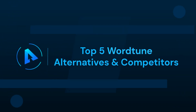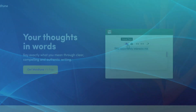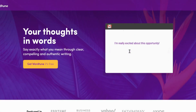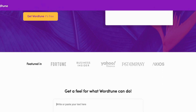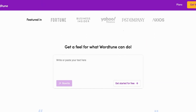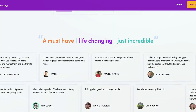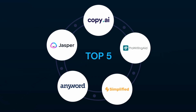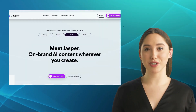In this video we'll talk about the top five Wordtune alternatives and competitors. Welcome to our alternatives channel. If you've come here looking for alternatives for Wordtune, today we will be talking about the top five alternatives, including Jasper, Copy AI, ProWritingAid, Simplified, and AnyWord. Now let's learn about the best writing assistance tools.